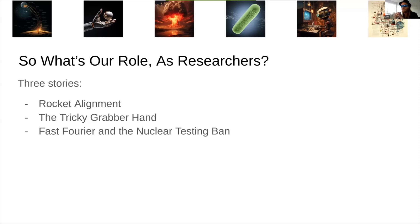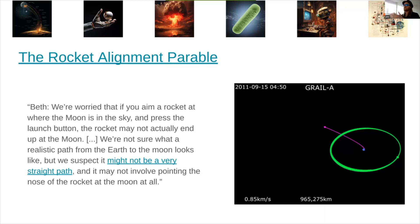What I am going to talk about is our role as researchers in dealing with AI risk. I'll be starting out with three different stories or frames for thinking about this. First one is going to be called the rocket alignment problem. Second one is about a tricky grabber hand. And the third one is a little bit of history about nuclear testing bans. So first up, a parable. This is called the rocket alignment problem. You can read it online. It's a very entertaining post. Basic pitch is you've got a world where people are trying to get to the moon and they haven't even invented calculus. Somehow engineering dipped way ahead of everything else. And they really don't understand how orbital mechanics work.